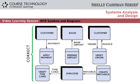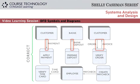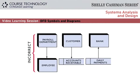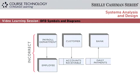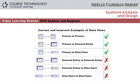Here are four correct ways to connect entities. An entity only can connect to a process. Notice that an entity can send data, receive data, or both. These examples are incorrect because an entity can't connect to another entity or to a data store. Here's a recap of the rules. This might be a good time to pause and review them.